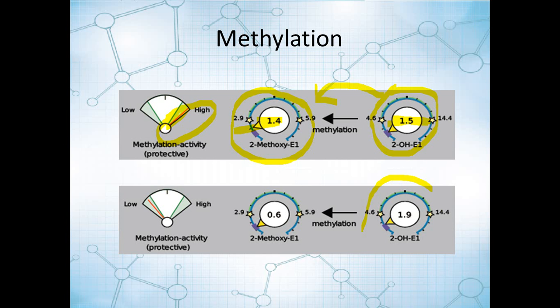In this example on the bottom, the 2-OH estrogen is about the same, 1.9, yet the 2-methylated product is a lot lower. So then the relative methylation is relatively low. So in that case, you may have a nutrient deficiency. You may have a genetic defect for your methylation, and that's worth exploring and potentially supporting, as this is important not just for your estrogens, but also for DNA, for catecholamines.